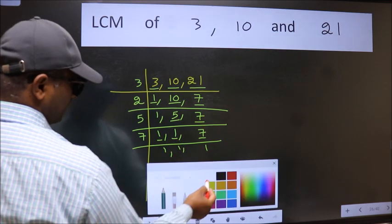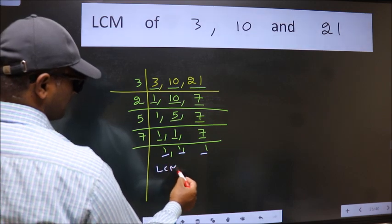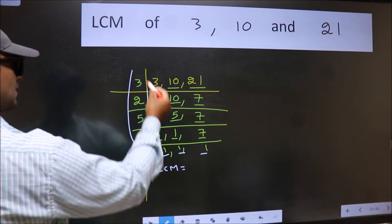So we got 1 in all the 3 places. So our LCM is the product of these numbers.